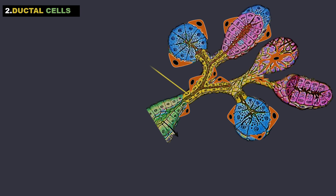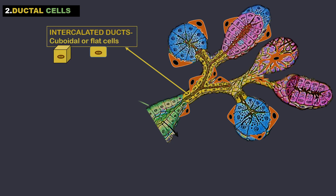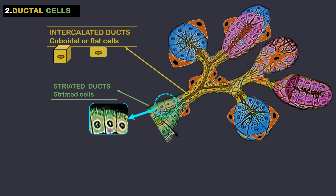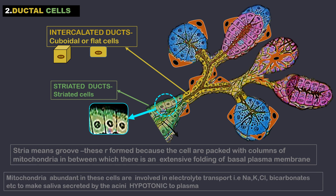Next are the ductal cells. Intercalated ducts have cuboidal or flat cells. Striated ducts show cells that are striated — that is, they have lines. If you look at these cells carefully you can see these striations. Stri means lines. You can pause and read more about why these lines are formed.